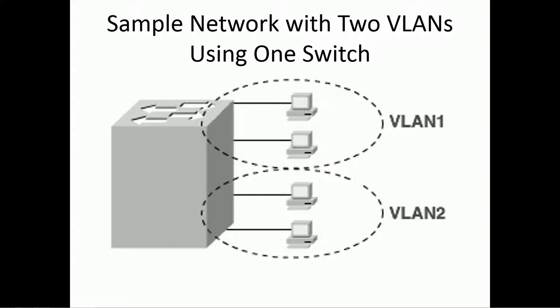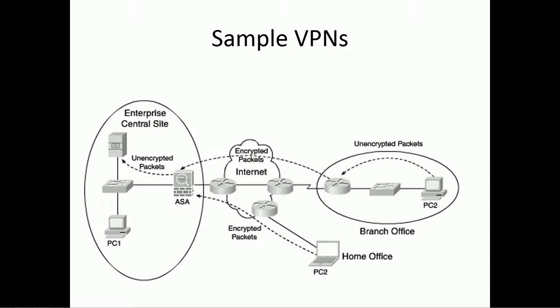What is a VPN? VPNs are virtual private networks — a way for us to extend our network throughout the internet to remote locations. Here we have two locations: a branch office, a centralized site, and a home office. All of them tunnel through the internet back to the central office for connectivity or access to resources, whether it's a physical location or a mobile worker.